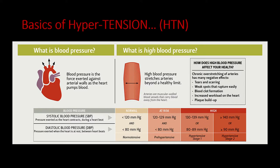The licensure examination tests whether you know what stage a patient is in. Normal blood pressure is below 120/80. Pre-hypertension is 120–129 systolic. Stage 1 is 130–139 systolic or 80–89 diastolic. Stage 2 is above 140 systolic or above 90 diastolic.